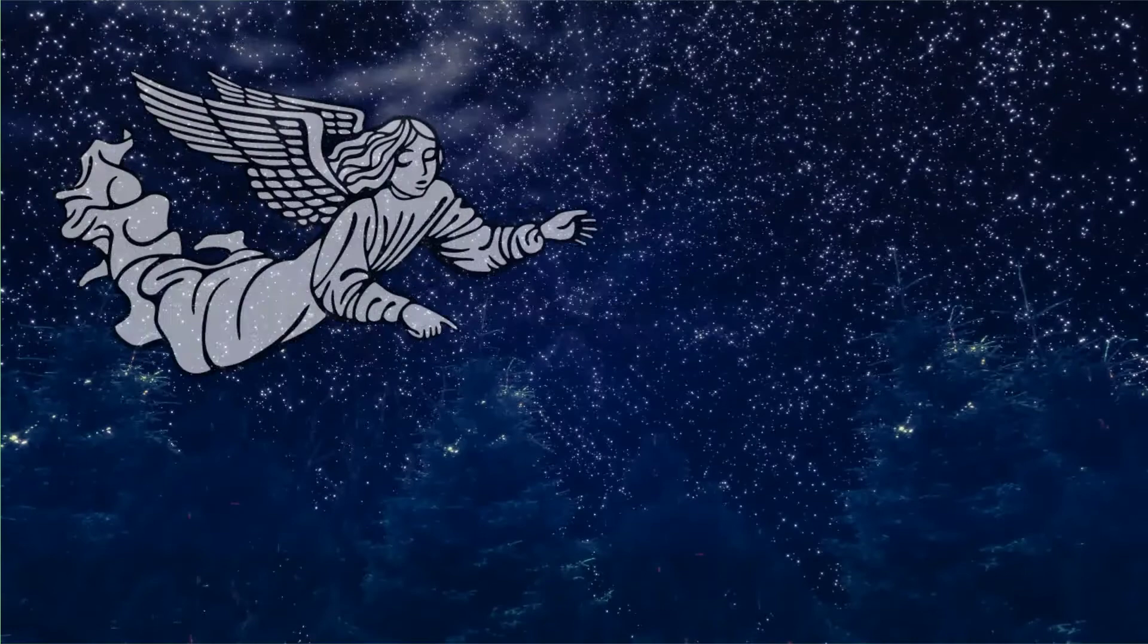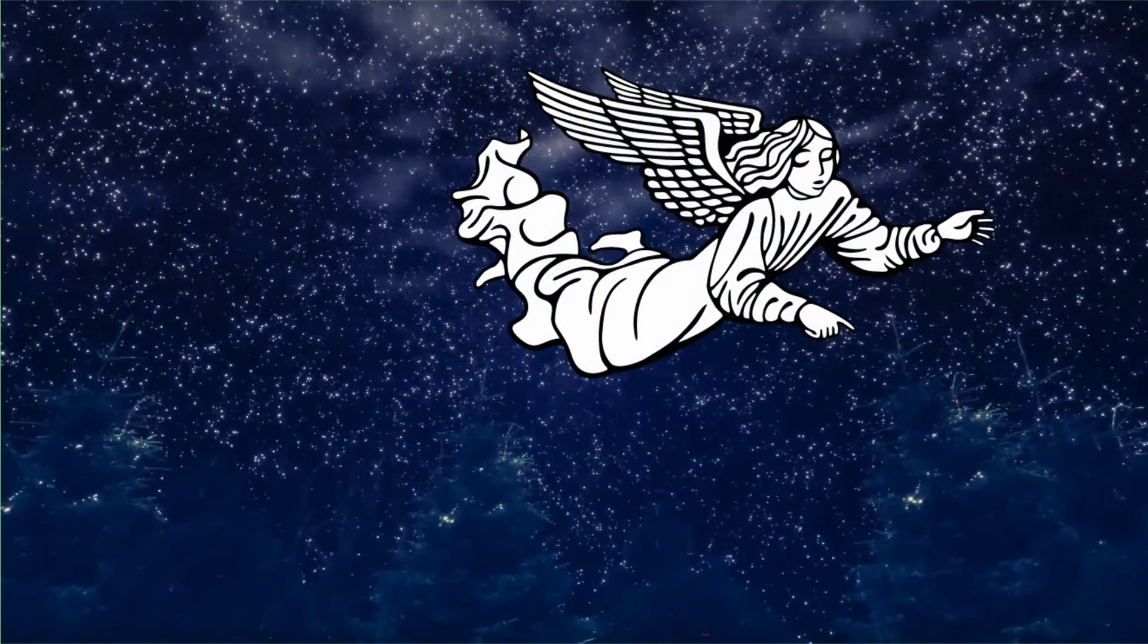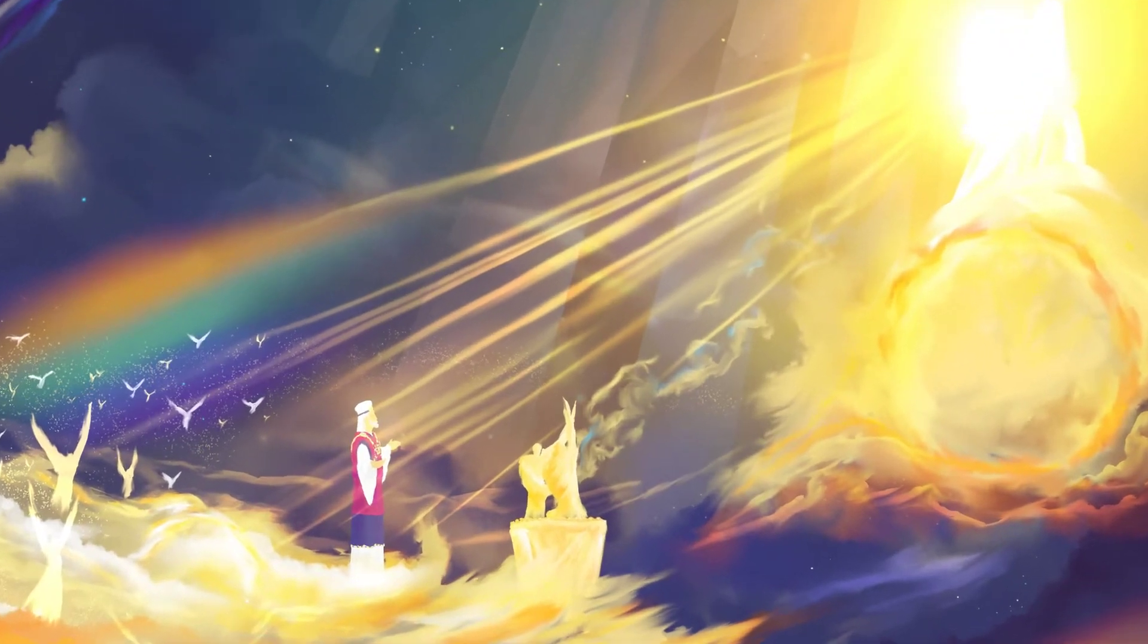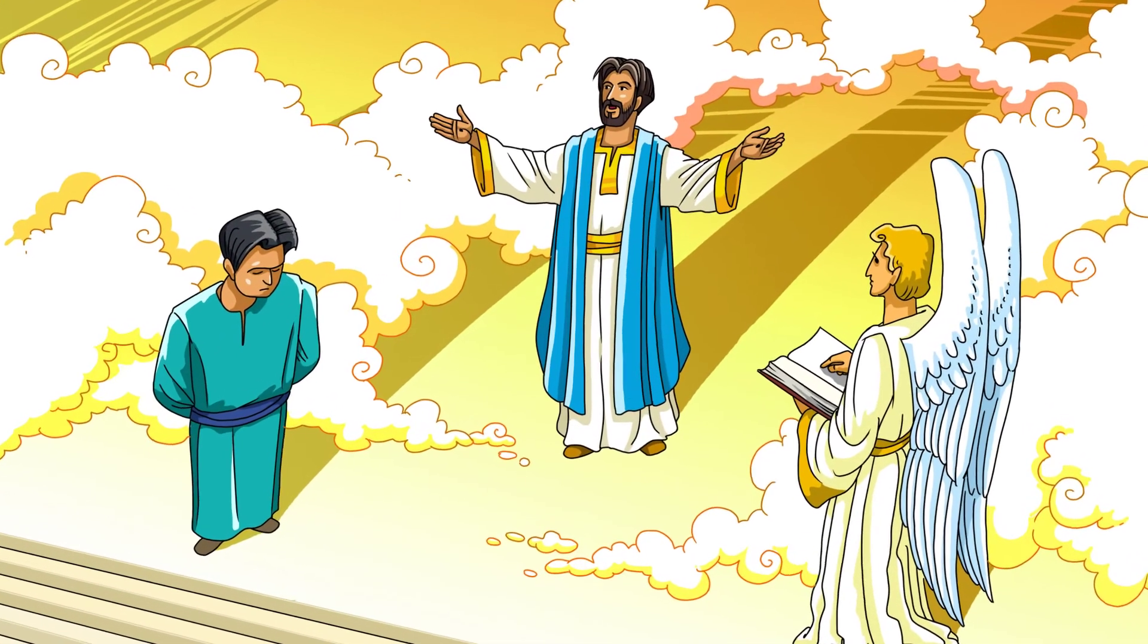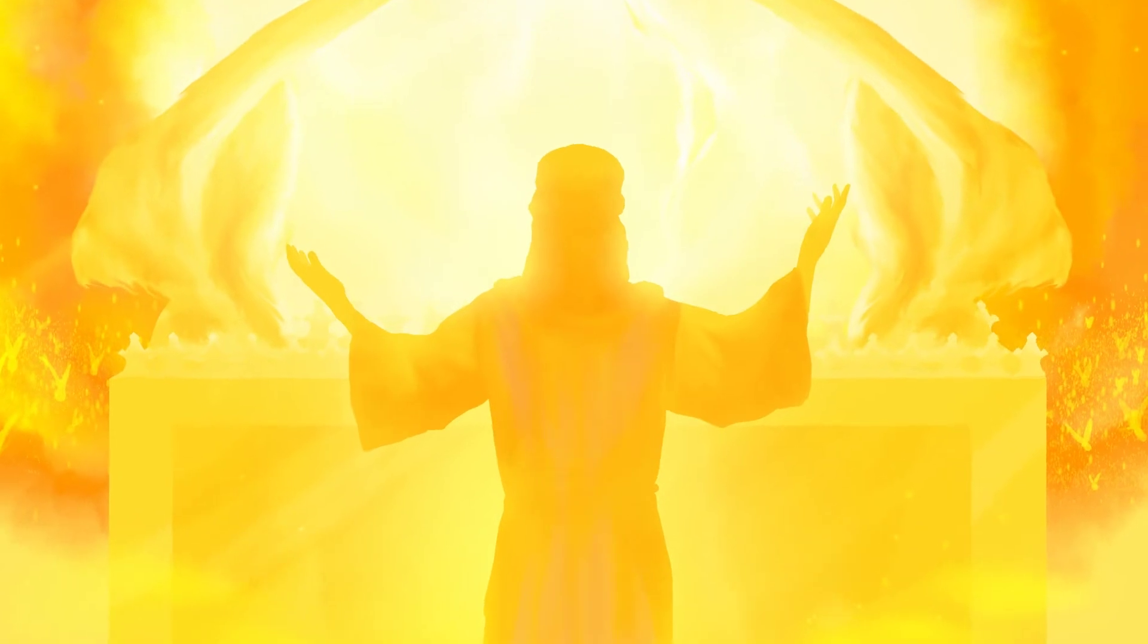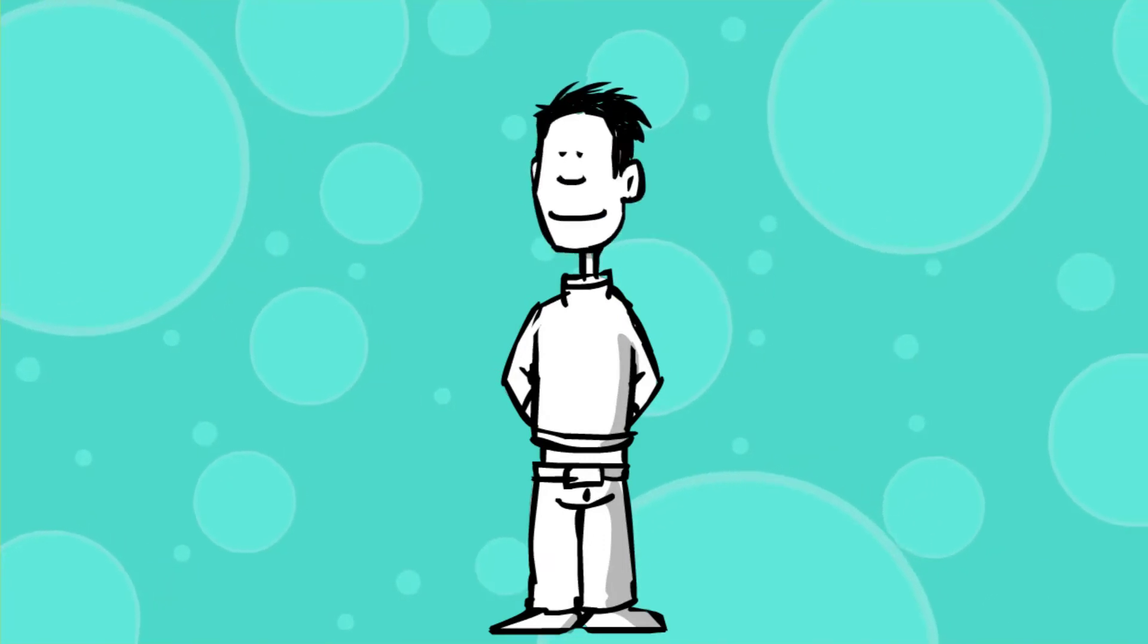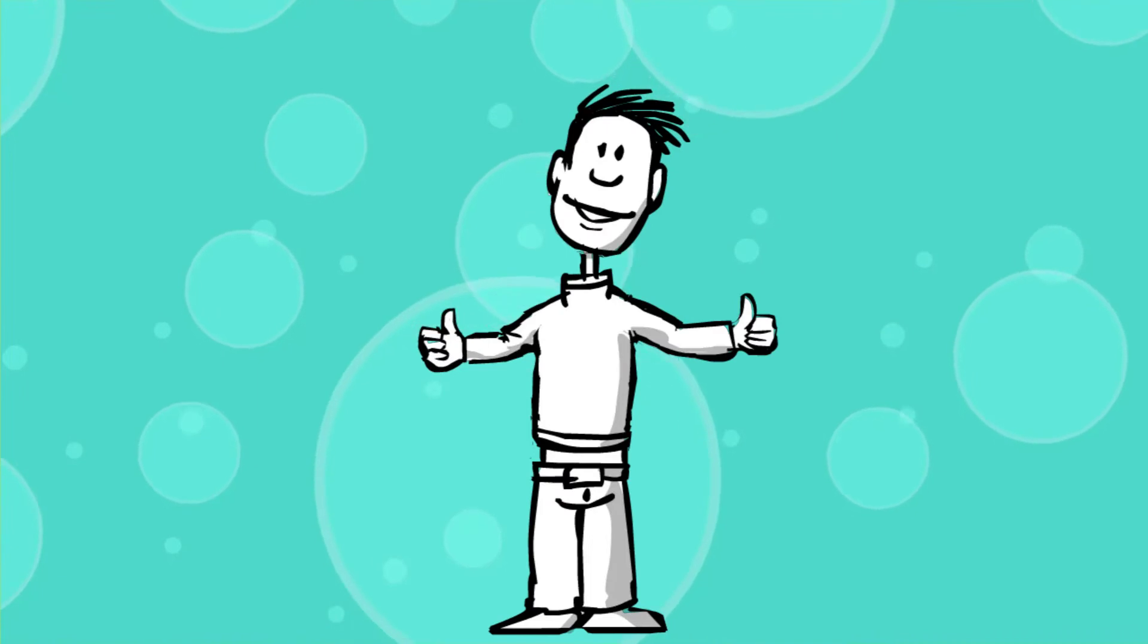Revelation's first angel says to fear God and give him glory because the hour of his judgment has come. We give God glory for the judgment because Jesus provides his perfect life in place of all of our mess-ups. The judgment is not something to be afraid of; it's all about Jesus.